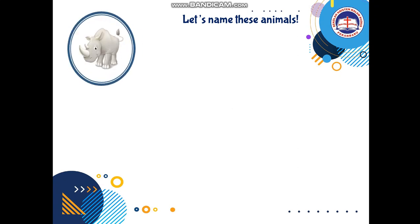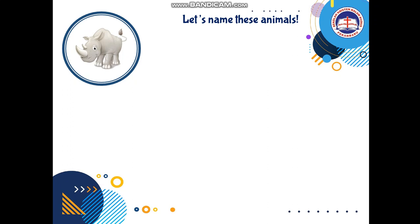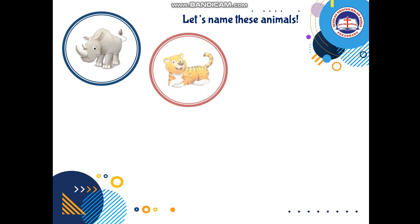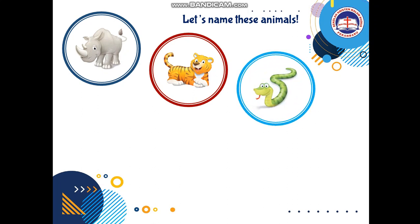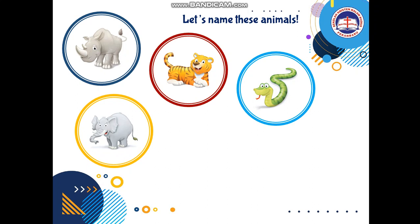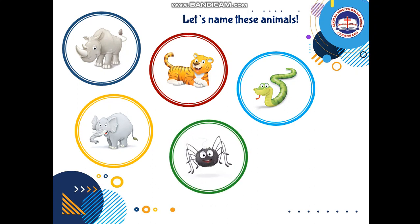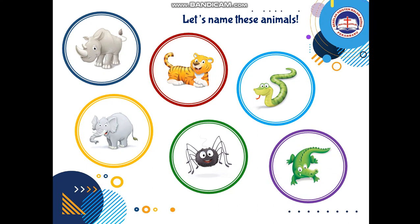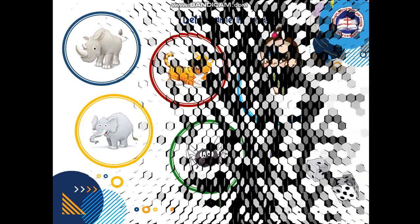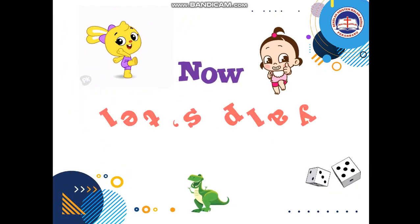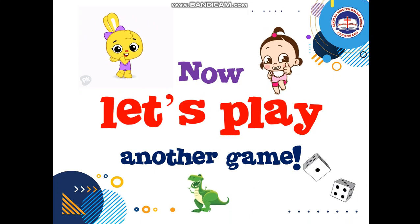Let's have a look at animal number one — rhino. That's right. Tiger. Very good. Snake. Well done. Elephant. That's right. What else do we have? Spider. Good job. And what else do we have? Crocodile. Okay great, clap your hands! Now you have named all the animals.